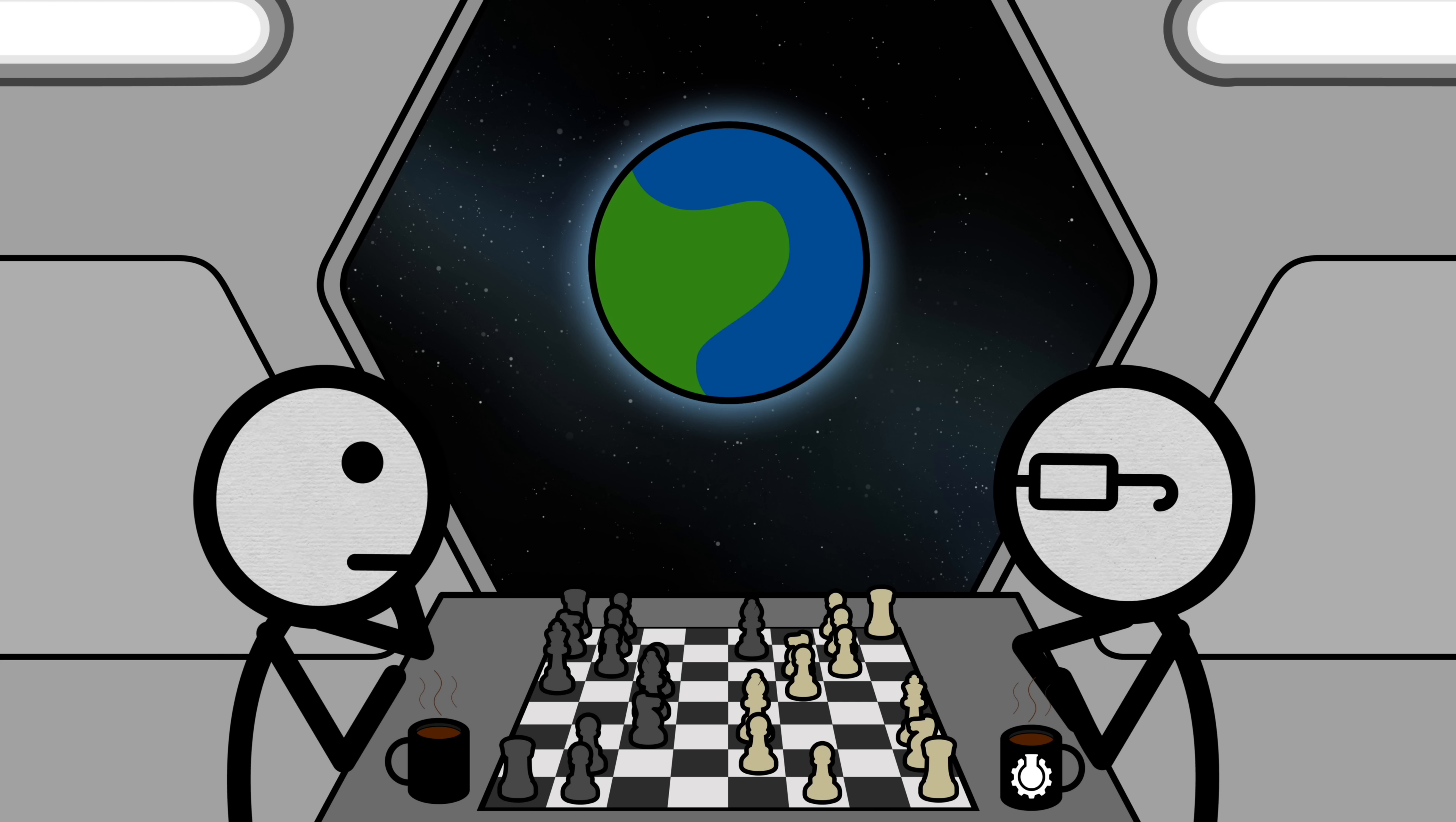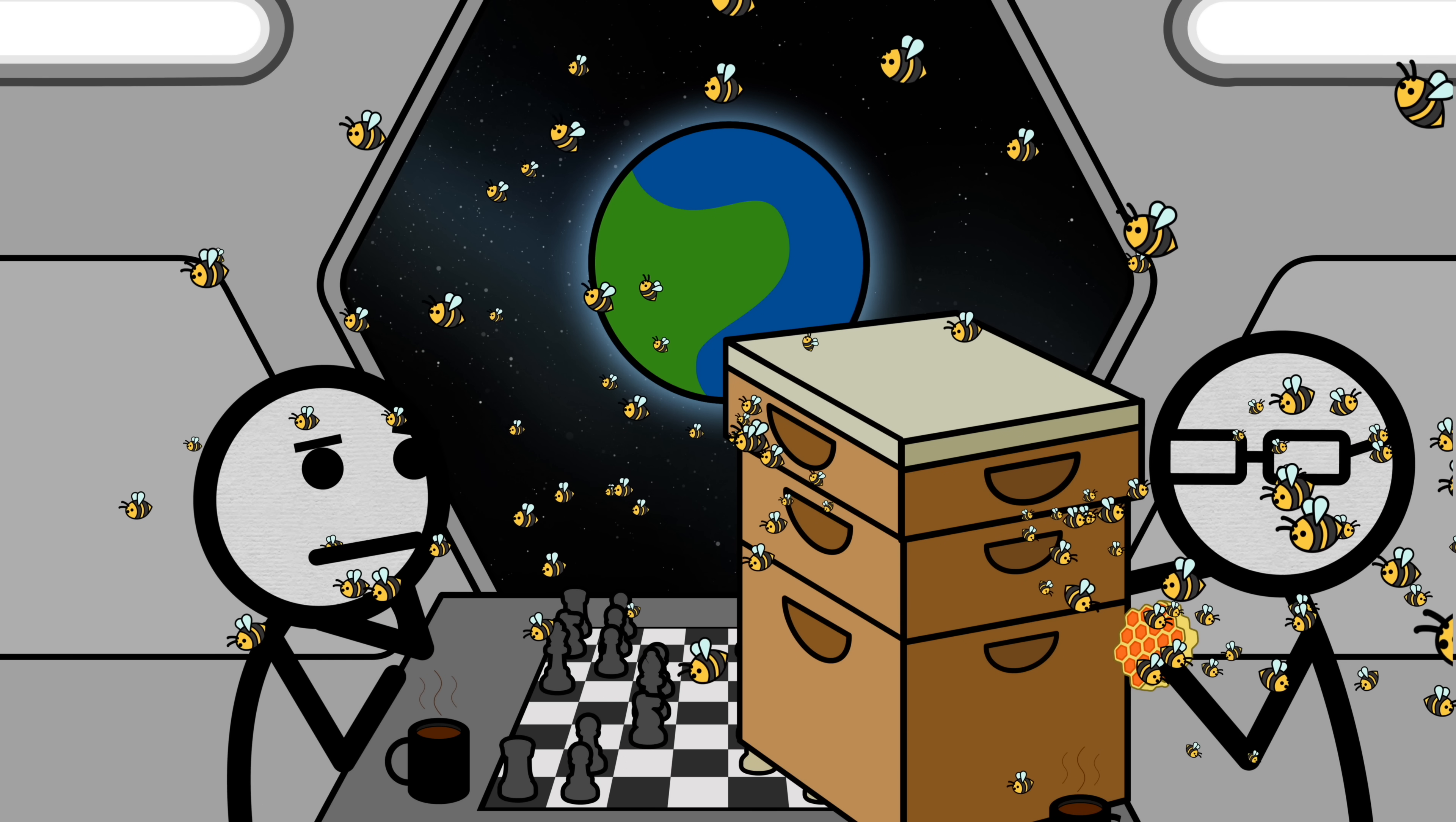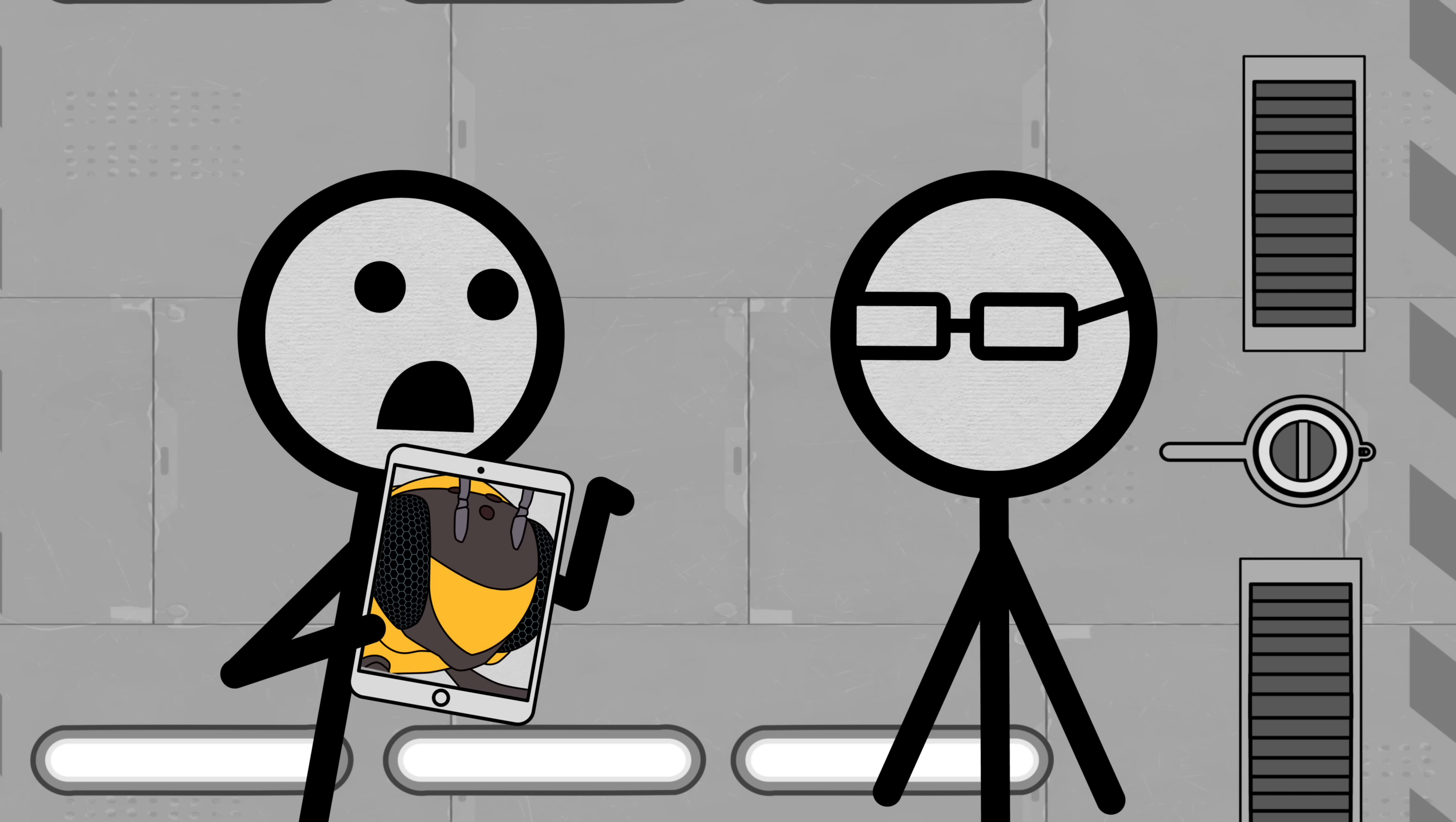You know, hexagons are the bestagons. Why? Because bees. Bees are the best and build only the bestagon, the hexagon. Now, I know what you're thinking. Bees build hexagons because they're hexapods with hexagon eyes. How could they do otherwise?